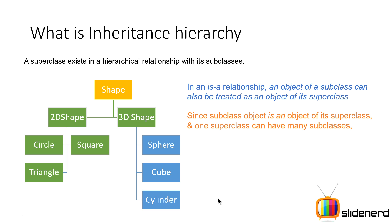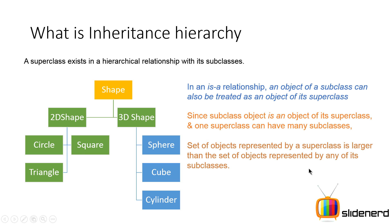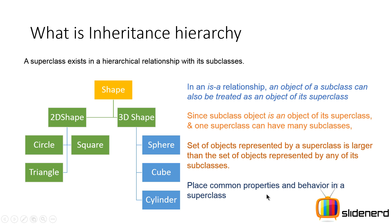Since a subclass is an object of the superclass, and one superclass can have many subclasses, the set of objects represented by a superclass is larger than the set of objects represented by any of its subclasses. For example, 2D Shape has three subclasses. All the objects of Circle, all the objects of Square, plus all the objects of Triangle are considered to be all the objects of 2D Shape, in addition to its own objects. That is why the set of all 2D Shape objects will be greater.